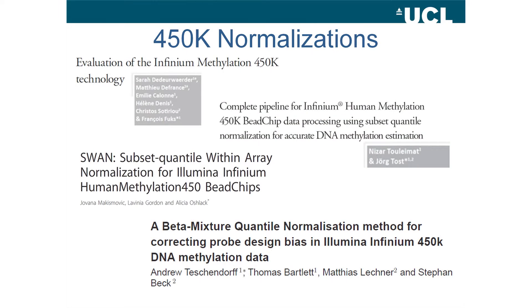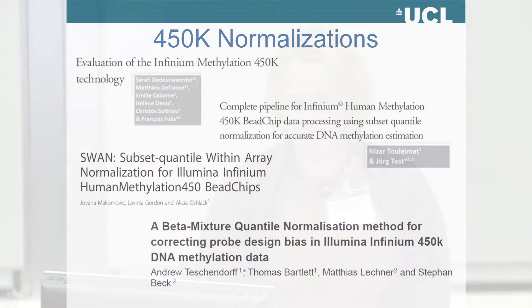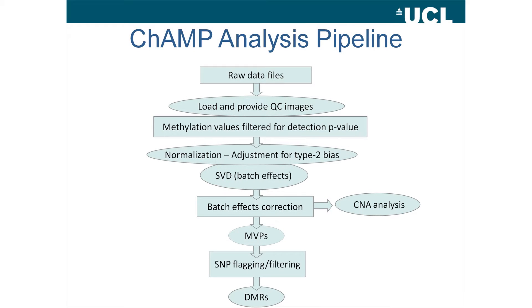There are four normalizations that have been published, and I think most of them were mentioned this morning. There's a PBC peak-based correction method, a subset quantile normalization method, the SWAN method, and the most recently published beta mixture quantile normalization method called BMIQ. I'll present a pipeline that we've developed which incorporates all four normalization methods.